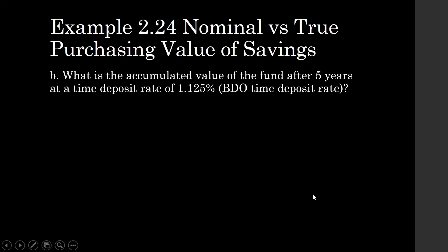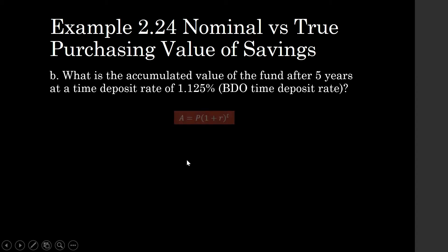What is the accumulated value of the fund after 5 years at a time deposit rate of 1.125%? This is the other bundle of 1 million pesos, which we deposited in a fund managed by BDO. It will earn interest at a rate of 1.125%. On paper, the interest rate will add value to your 1 million pesos, so let's see what happens to its future value.